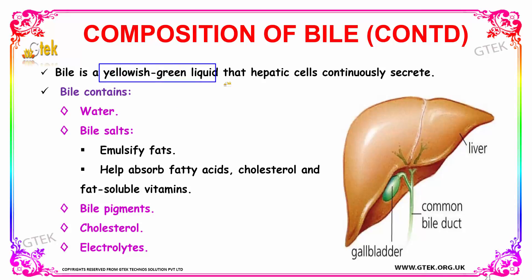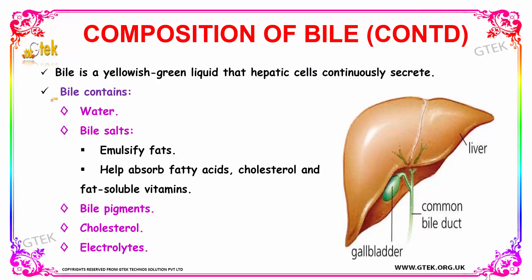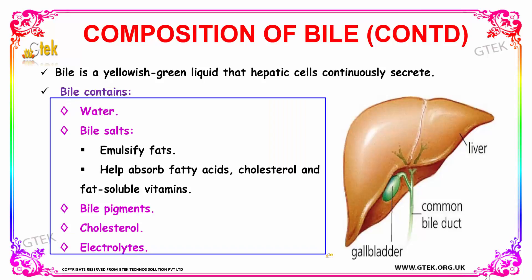Bile is a yellowish-green liquid which is produced by the hepatic cells present in your liver and is continuously secreted. It is composed of water, bile salts which emulsify fats and help in absorbing fatty acids, cholesterol and fat-soluble vitamins, bile pigments, cholesterol, and electrolytes. These are the compounds which combine to produce bile.